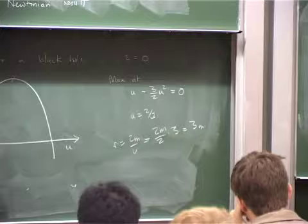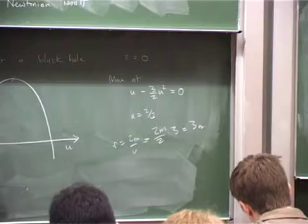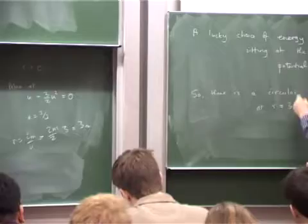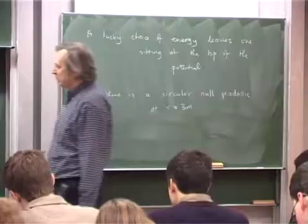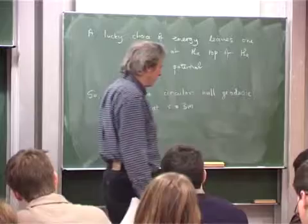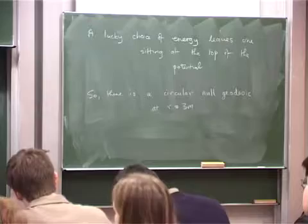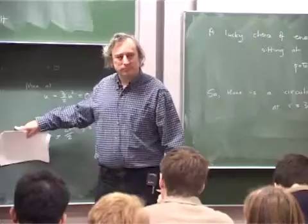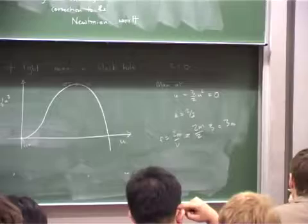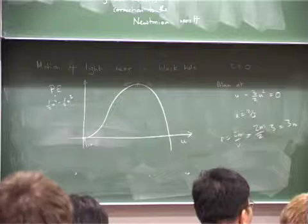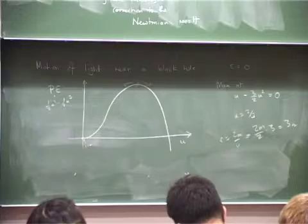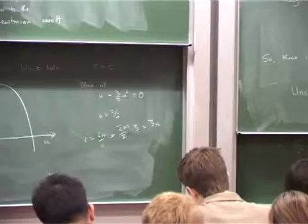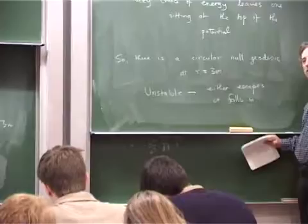This is called a circular null geodesic at r equals 3M. You will notice it's unstable. If you perturb this geodesic, say by a passing grain of dust, you fall off either to the left — where the photon escapes to infinity — or to the right, where u increases without bound, r decreases without bound, and the photon falls into the black hole. So it either escapes or falls in, depending on which way you perturb it.